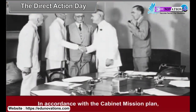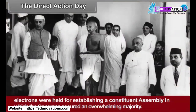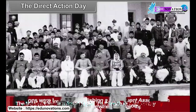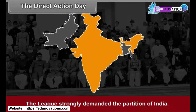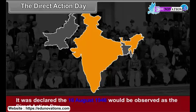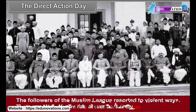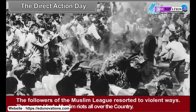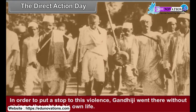In accordance with the Cabinet Mission Plan, elections were held for establishing a constituent assembly in which the Congress secured an overwhelming majority. The Muslim League refused to join the constitution-making process and strongly demanded the partition of India. It was declared that 16th August 1946 would be observed as the Direct Action Day with a view to explaining the League's stand on the creation of Pakistan. The followers of the Muslim League resorted to violent ways. There were Hindu-Muslim riots all over the country. There were massacres in the Noakhali region in the province of Bengal. In order to put a stop to this violence, Gandhiji went there without giving a thought to his own life and strove hard to establish peace there.